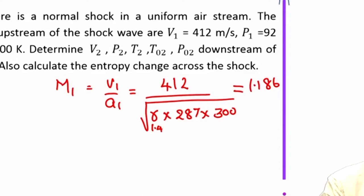Now what we need to measure is P2 by P1. Pressure after the shock P2 by P1 for Mach number of 1.186 is 1.474. P2 is nothing but P1 multiplied by 1.474, this is 135.64 kilo Pascal.